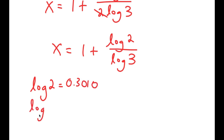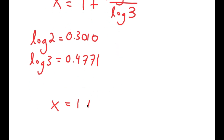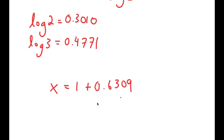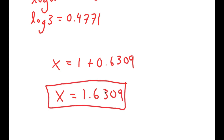Evaluating numerically: log 2 is approximately 0.3010 and log 3 is approximately 0.4771, so x equals 1 plus 0.3010 over 0.4771, which equals 1 plus 0.6309, giving x approximately equal to 1.6309.